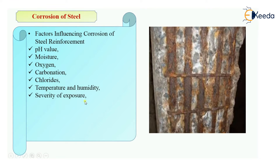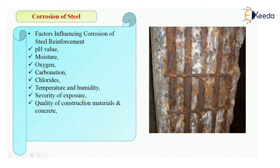Then the severity of exposure conditions — various exposure conditions, whether the environmental condition is mild, moderate, or very severe, depending upon the locality you are in, that also affects the corrosion of steel. Then the quality of construction material you are using in the concrete structures. Then cover to the reinforcement — how much nominal cover you are providing to the reinforcement also affects the corrosion of steel.